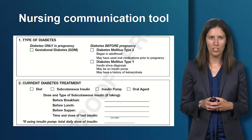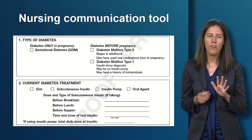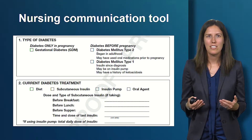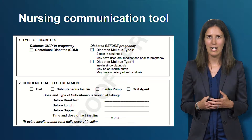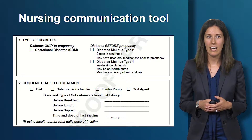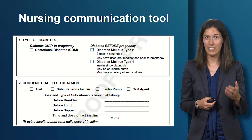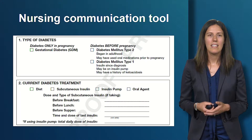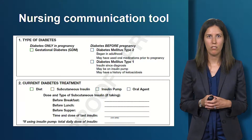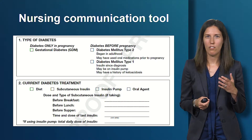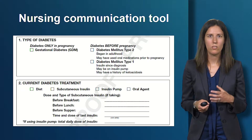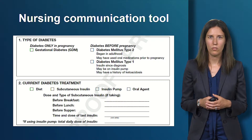Next, we'll go through the nursing communication tool. It is a short one-page document with five key points crucial for initiating patient care. The first is the type of diabetes — clinical features can help determine this, outlined further in the first video on the website. If the patient only has diabetes during pregnancy, they most likely have gestational diabetes; if it predates pregnancy, they may have type 1 or type 2. The second point is to record the current diabetes treatment, including insulin type, dose, and timing — insulin with meals and at bedtime — and the time and dose of their last insulin.